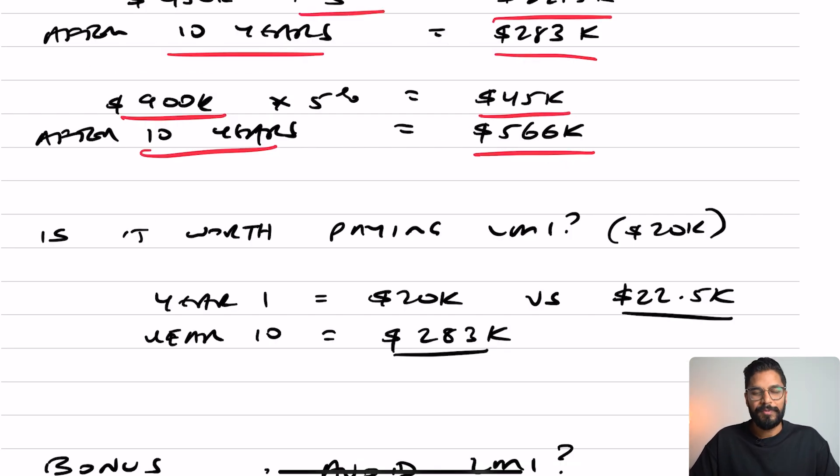Sounds pretty good. So we're going to use some simple maths and really figure out which option is better. Now, is it worth paying the LMI of $20,000? Well, after year one, it pretty much knocks itself out. The real difference comes after 10 years. It's the compounding effect. And after 10 years, we're actually ahead by $283,000.